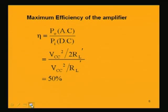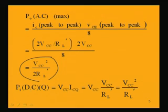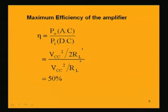The maximum efficiency is the ratio of maximum AC output power to DC input power: η = (V_CC² / 2R_L') / (V_CC² / R_L') = 1/2 = 50%. So the transformer-coupled class A power amplifier achieves 50% maximum efficiency, which is higher than the series-fed class A amplifier discussed earlier.